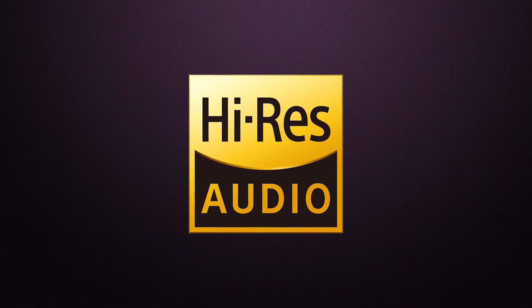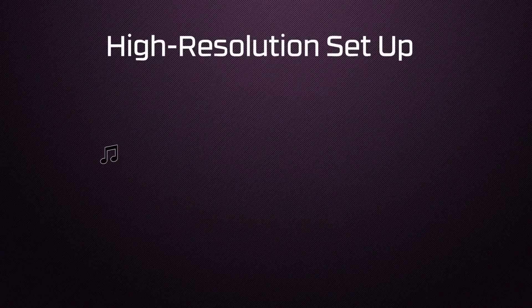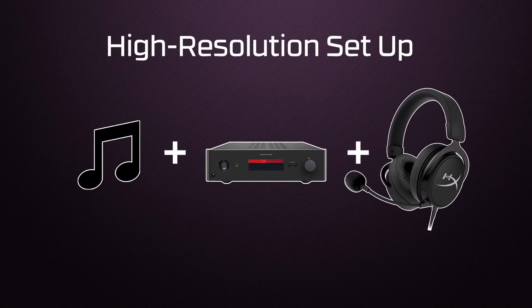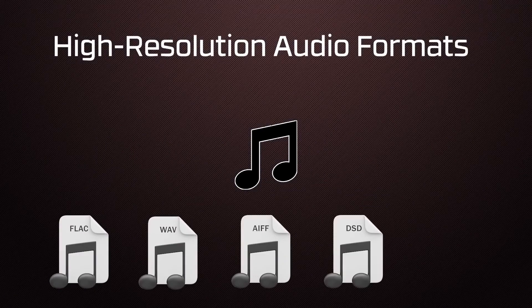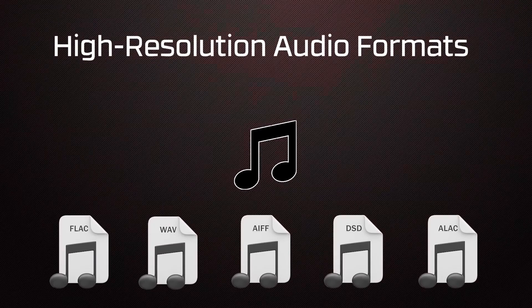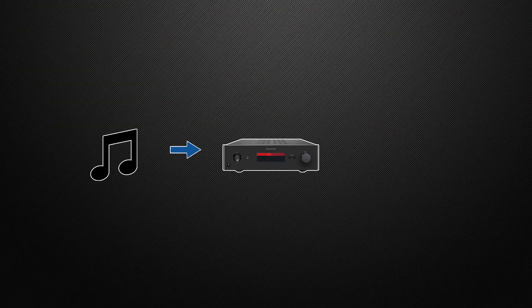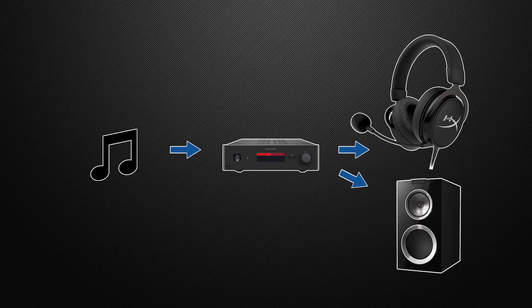In order to experience high-resolution audio, you'll need to make sure that you have all the required high-res components: content, a playback device, and an output device. Typically, these audio formats are high-res versions of FLAC, WAV, AIFF, DSD, or ALAC files. You'll also need a playback device that can process the content. Finally, you'll need an output device that can handle high-res formats, such as headphones or speakers that have been certified to output sounds at frequencies up to 40 kHz.